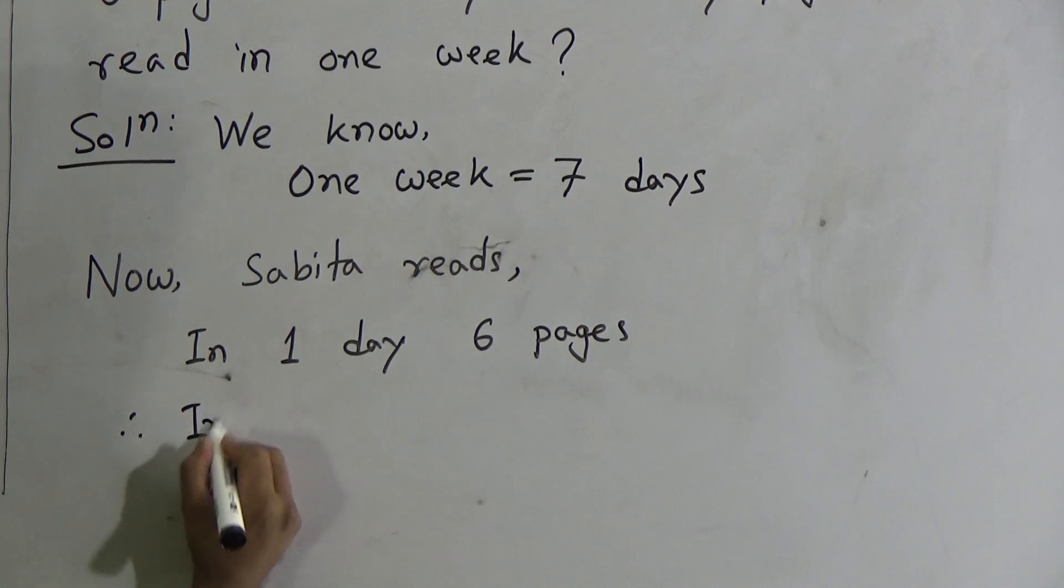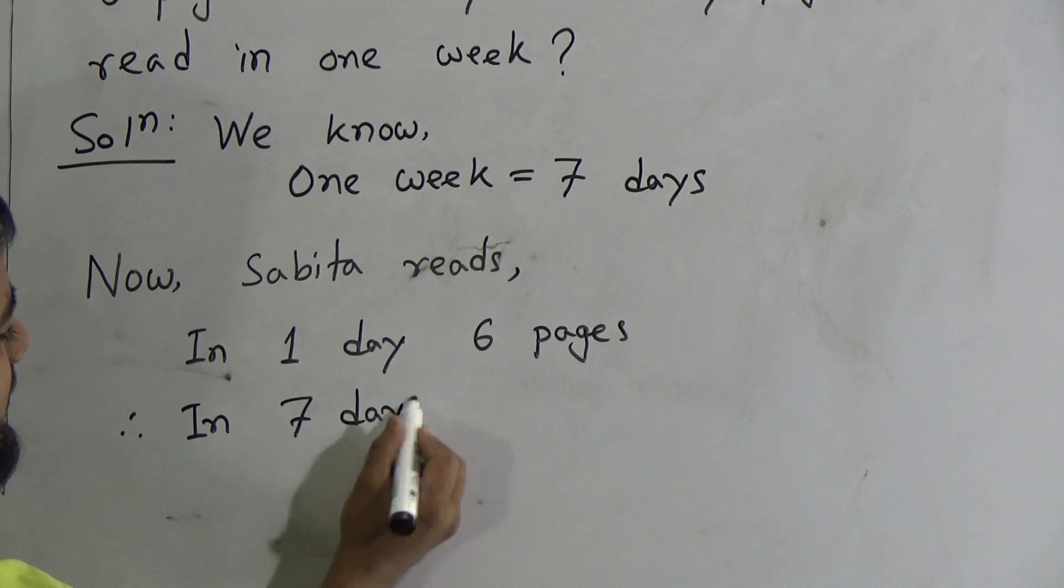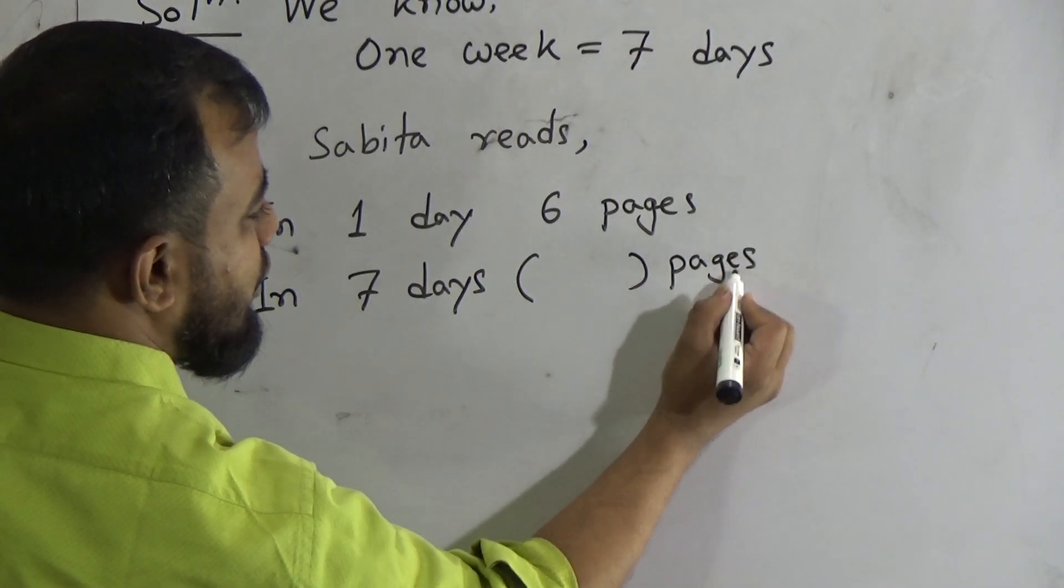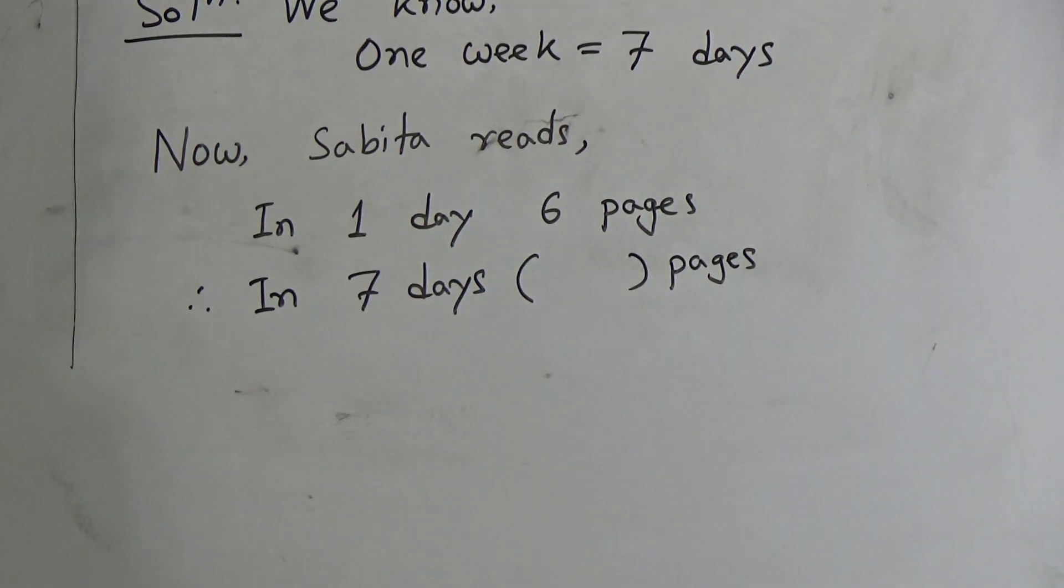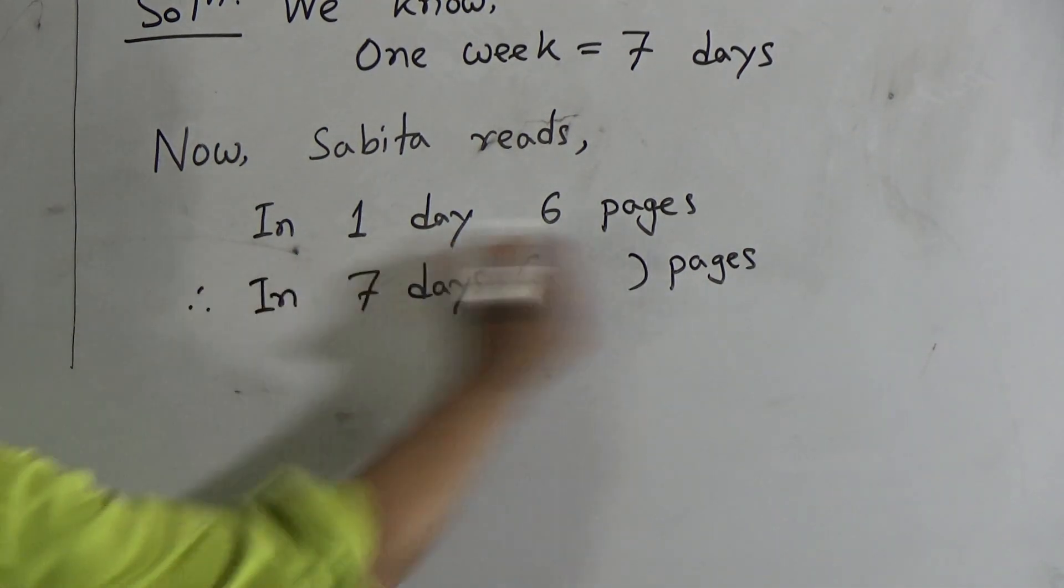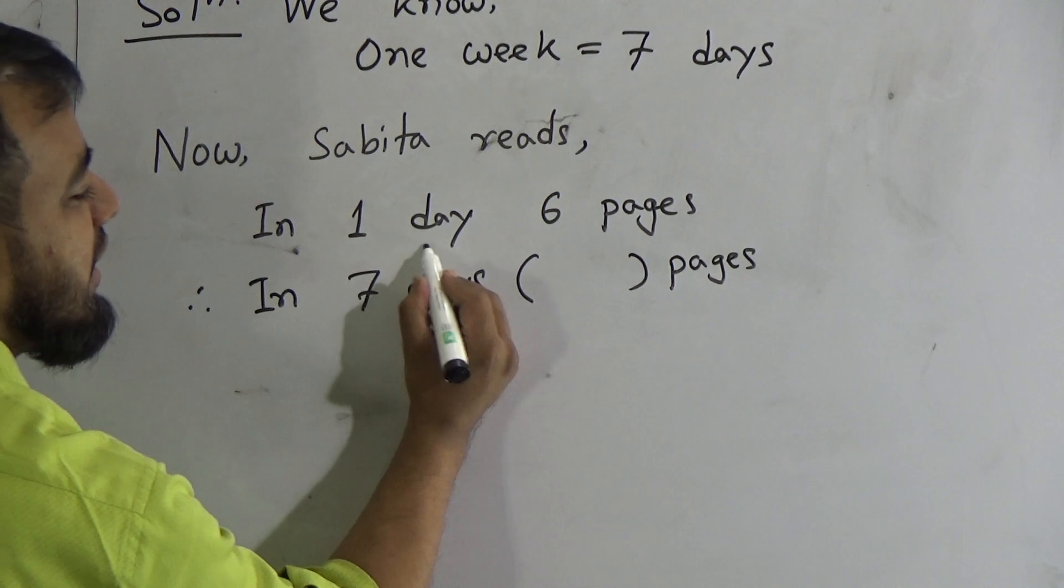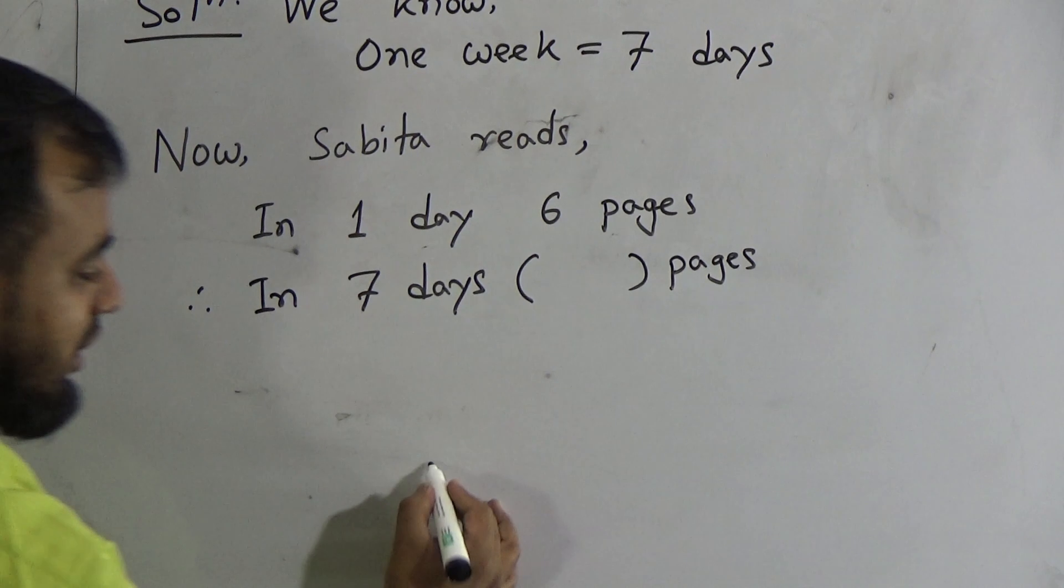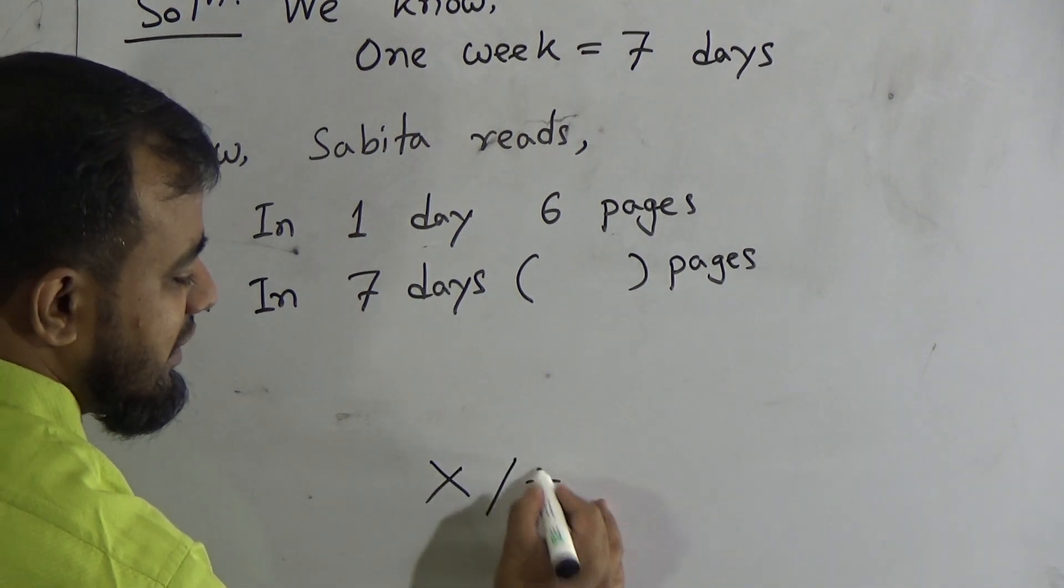Therefore, in how many days? In 7 days. In 7 days, how many pages we need to calculate? What should we do? What will be our operation? Look, my students, in the same line, there are 2 units. 1 is day, 1 is pages. And the units are different. That's why we should multiply, or we should divide.